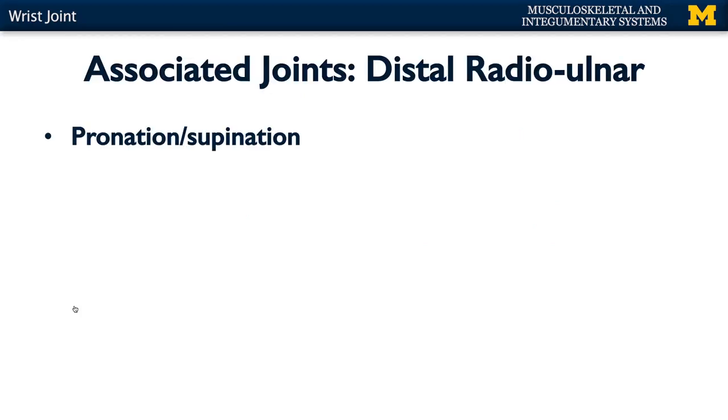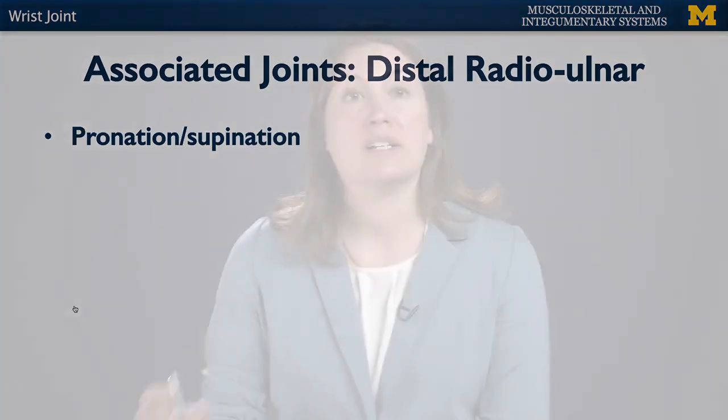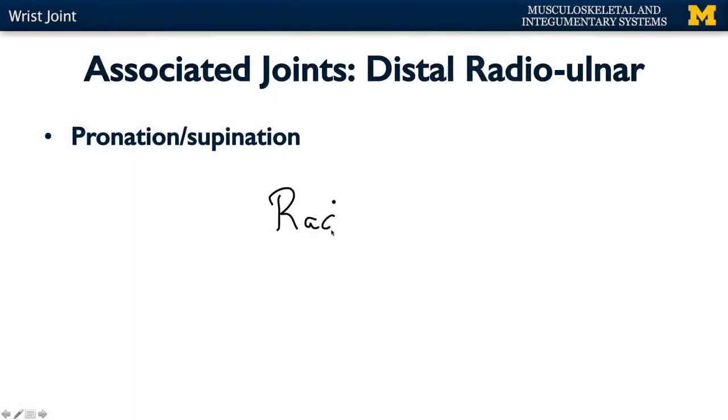In this area you also have the distal radioulnar joint. We discussed the proximal radioulnar joint, which is closely associated with the elbow. The distal radioulnar joint is more closely associated with the wrist, and is an additional area for pronation and supination. When we talk about pronation and supination, the moving bone is the radius — it's the radius that's actually rotating along the ulna. Importantly, muscles that affect pronation and supination will have their more distal attachment on the radius.